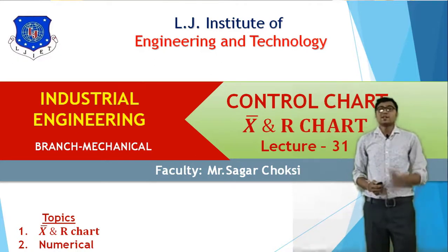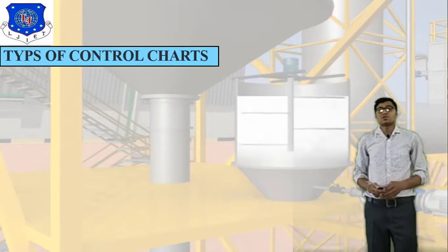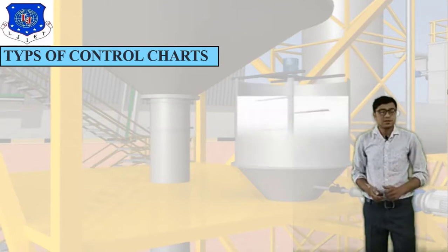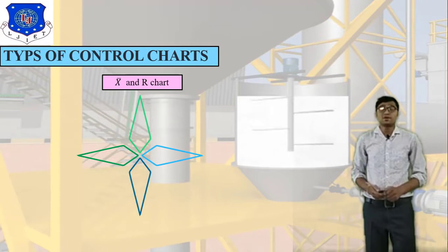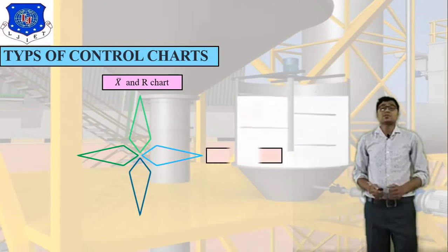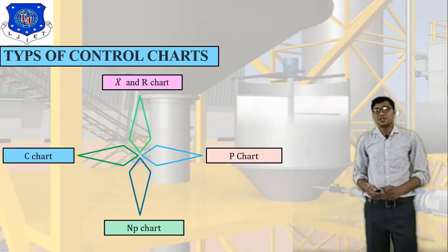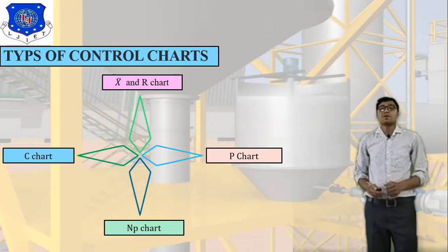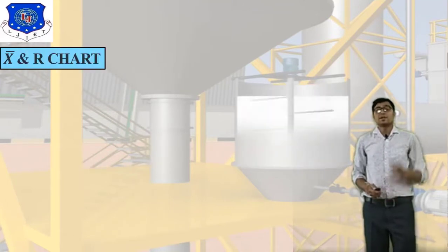This is lecture number 31. There are many types of control charts. I have attached a classification slide showing four different control charts: first, X-bar and R chart; second, P chart; third, NP chart; and fourth, C chart. In this particular session we are going to discuss about X-bar and R chart.